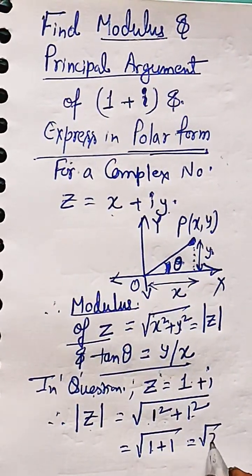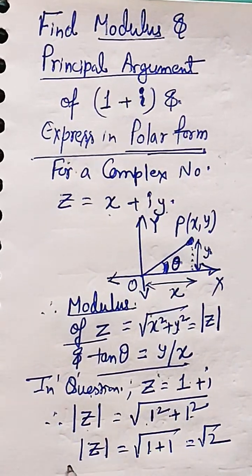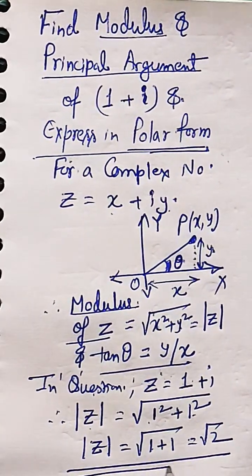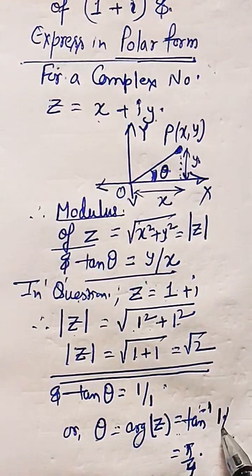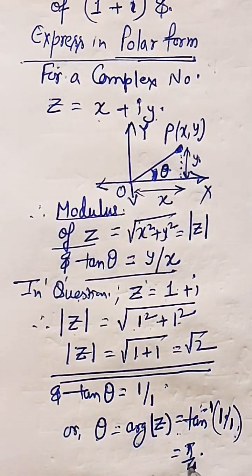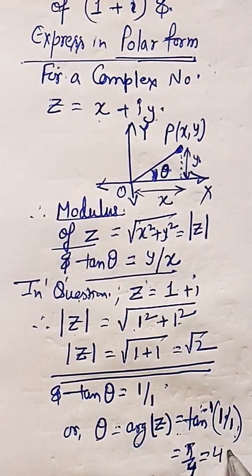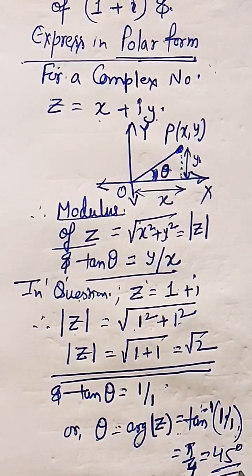What is the principal argument or amplitude of z? This is tan inverse 1 by 1, that is tan inverse of 1 is 45 degrees or pi by 4.